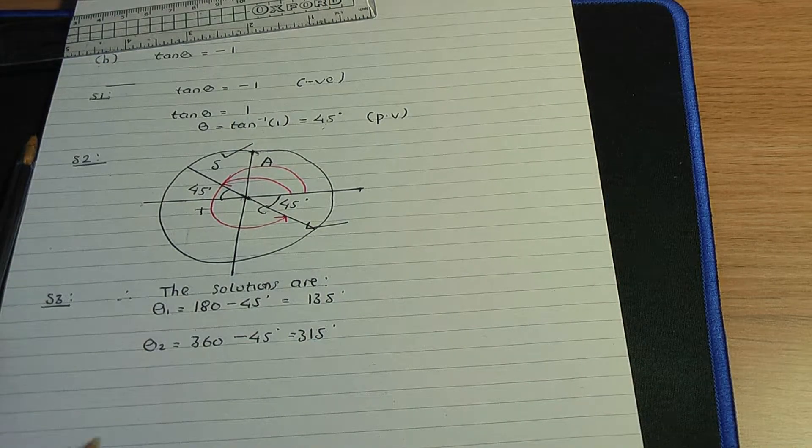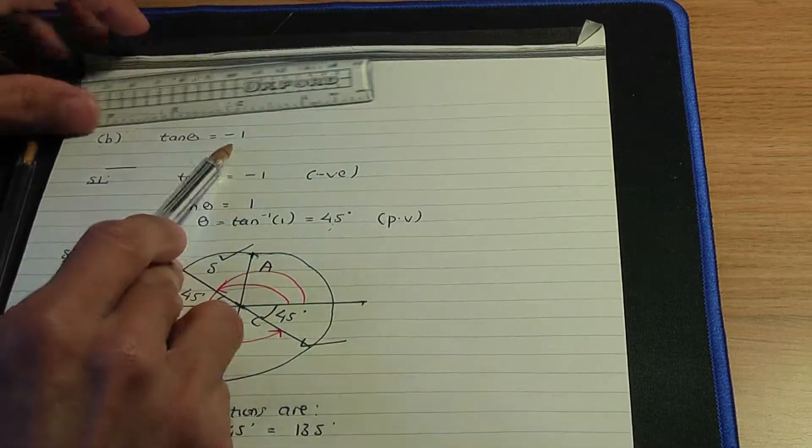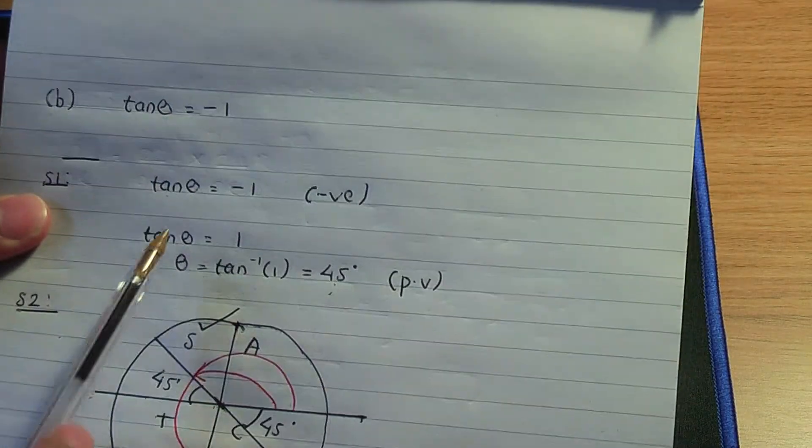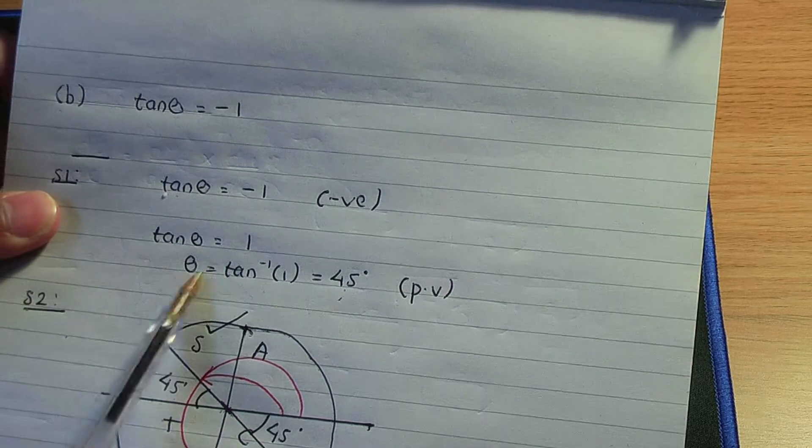So one thing to note, whenever you have a negative value on the right-hand side, when calculating the principal value only, ignore that negative and work out the inverse of the positive value.